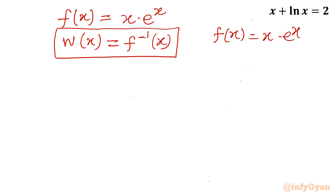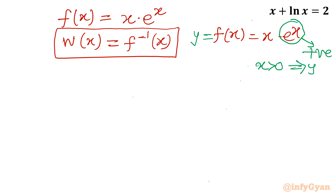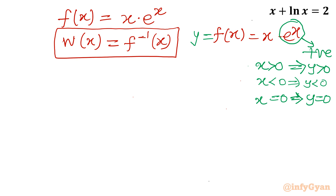Let us consider f(x) as x times e raised to the power x and draw a few conclusions. Since e^x is always positive, if x is positive then y is positive; if x is negative then y is negative; and if x equals zero then y equals zero. So the graph is below the x-axis on the left, above on the right, and crosses the x-axis only at the origin. We also find: as x tends to minus infinity the limit is zero; as x tends to infinity the limit is infinity; and at x equal to zero the value is zero.